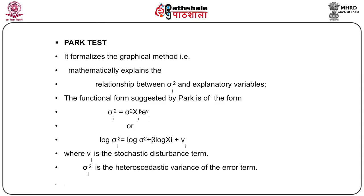The first formal method is the Park test, which formalizes the graphical method by mathematically explaining the relationship between sigma_i square and the explanatory variables. The functional form suggested by Park is: sigma_i square equals sigma square times x_i raised to the power beta times e raised to the power v_i. Taking the log on both sides, the model becomes: log(sigma_i square) equals log(sigma square) plus beta times log(x_i) plus v_i, where v_i is the stochastic disturbance term and sigma_i square is the heteroscedastic variance.